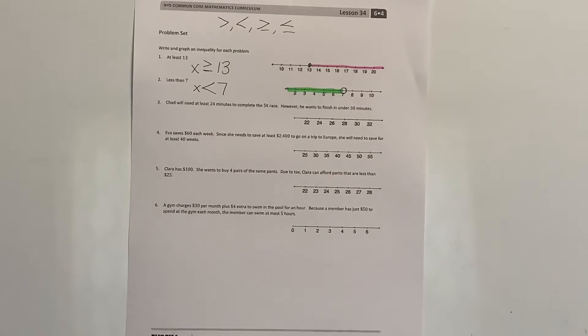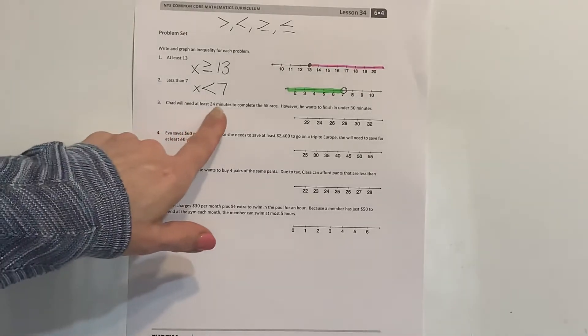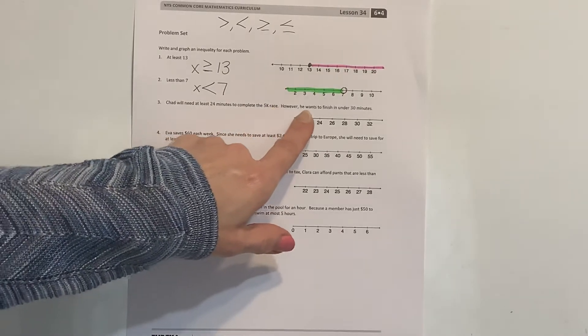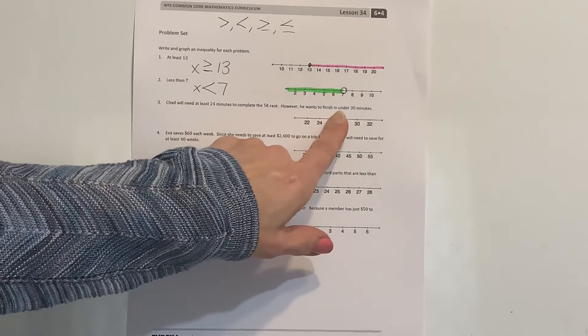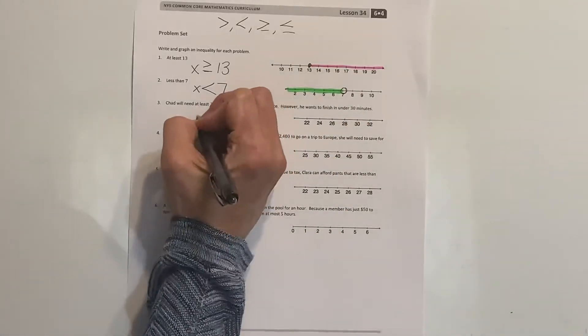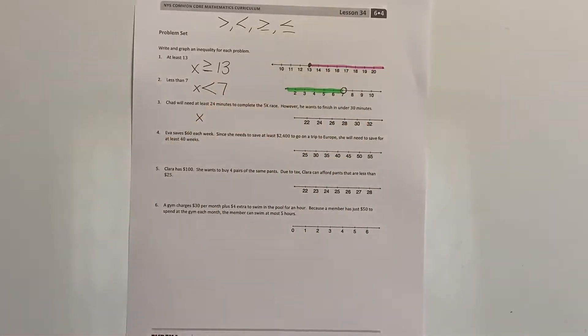Now we're getting into some of the real-world problems. These were just a warm-up. Chad will need at least 24 minutes to complete a 5k race, however he wants to finish the race in 30 minutes.